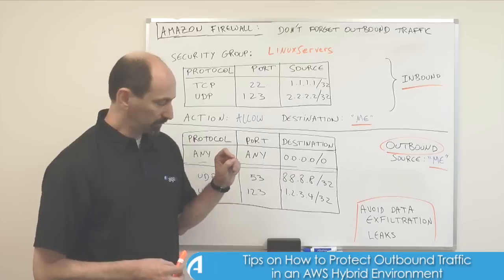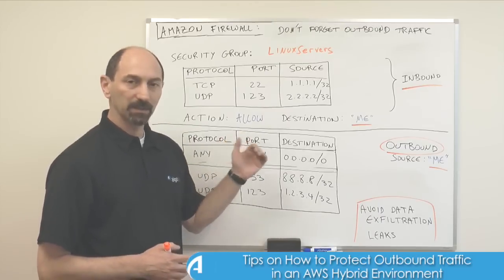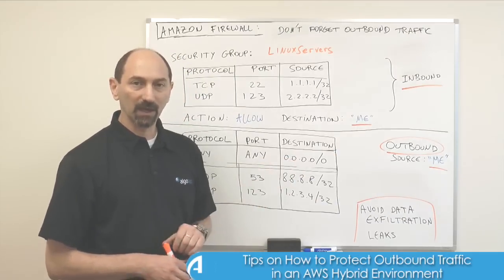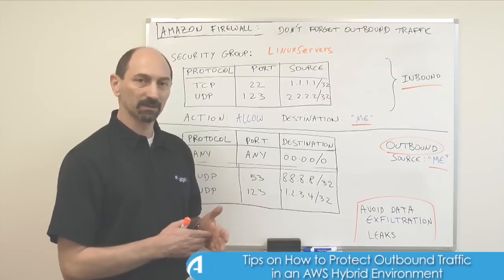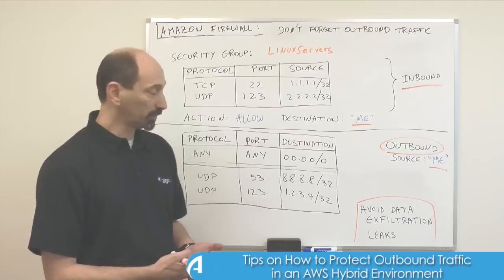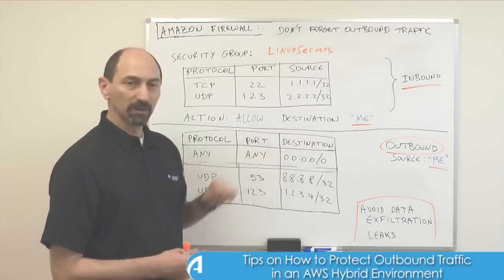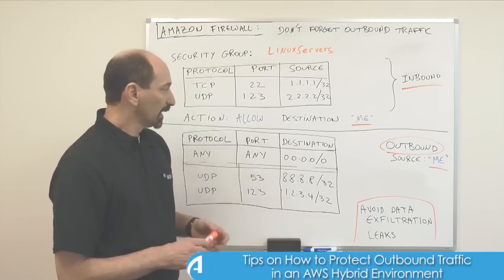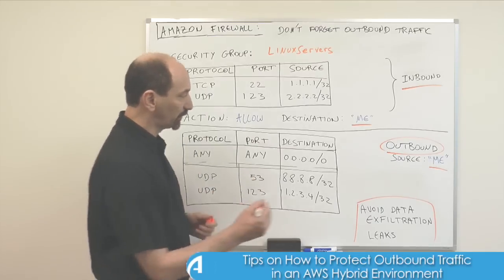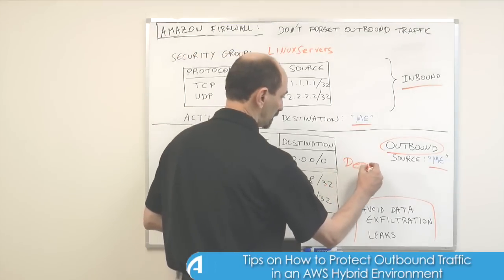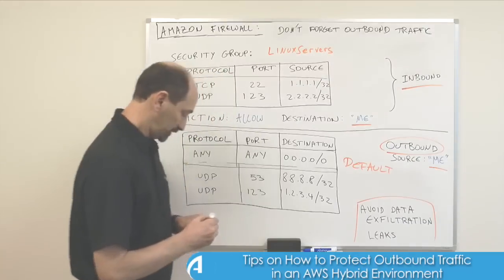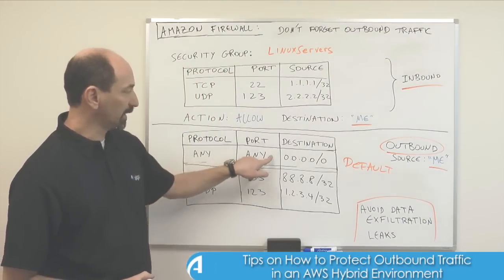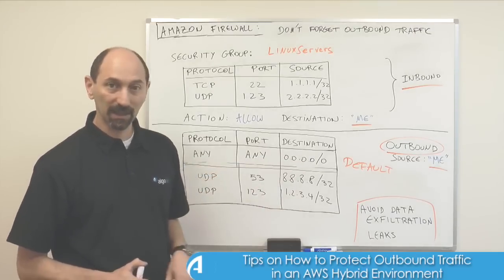One of the reasons — and pitfalls — for why you may not be aware that outbound rules are there is because the default wizard that you use to define a new security group does not bring you to the outbound tab at all. You have to select that manually, and if you do, you will see that by default you get a rule in every security group.